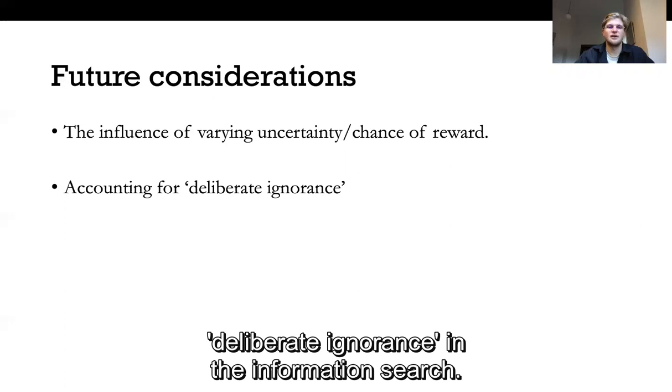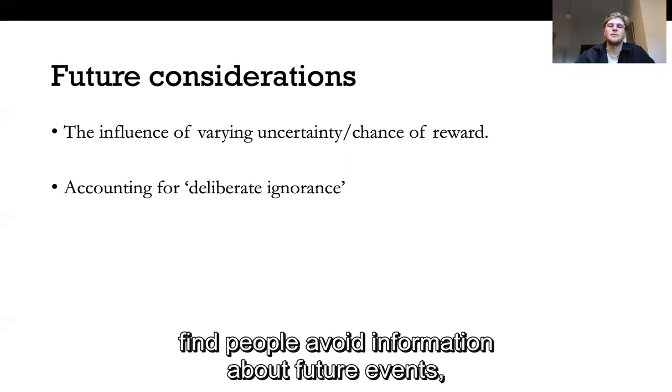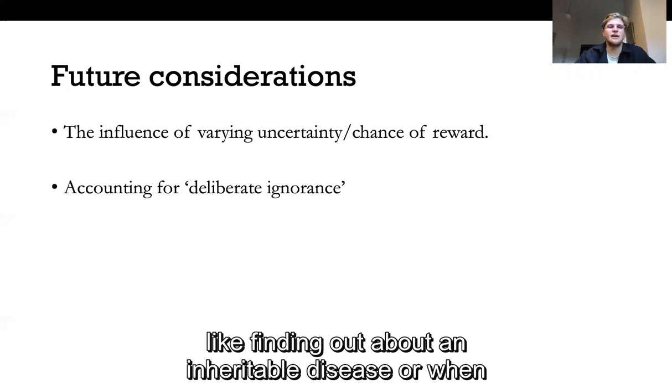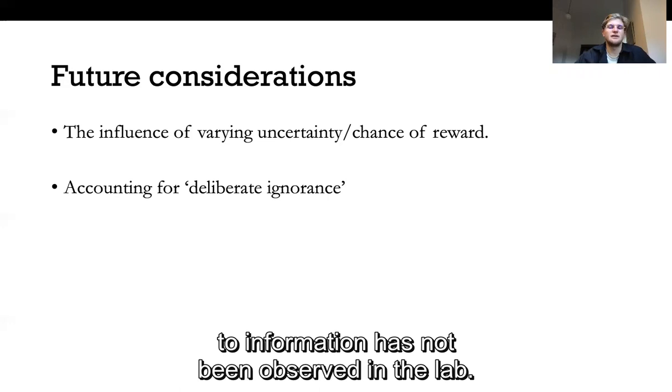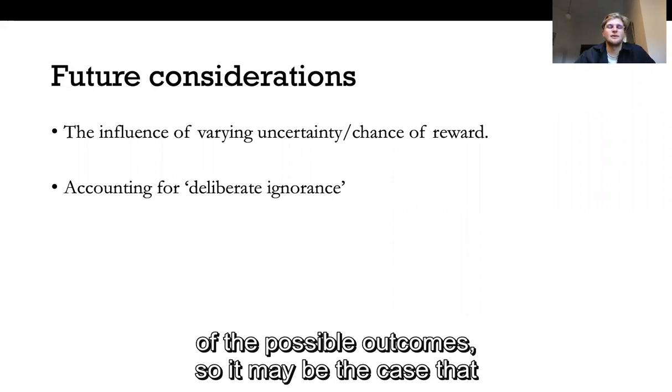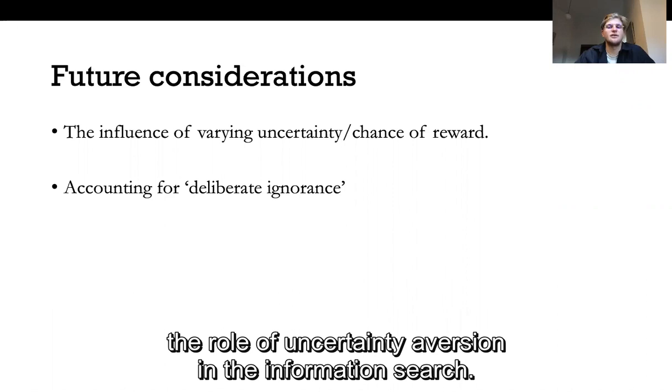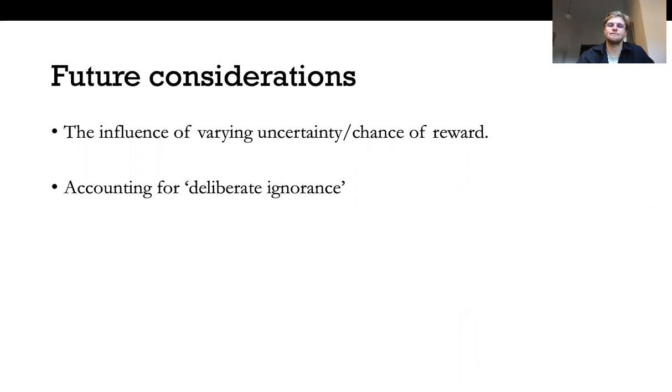Another behavior which needs to be considered is deliberate ignorance in information search. So field studies and hypothetical questionnaires find people avoid information about future events often when these are extremely aversive like finding out about inheritable disease or when you're going to die or when your partner's going to die. To our knowledge this sort of aversion to information has not been observed in the lab. Presumably this avoidance is due to fear or dread of the possible outcomes so it may be the case that in extreme circumstances anticipation outweighs the role of uncertainty aversion in information search. However this has not been found in any lab studies yet.